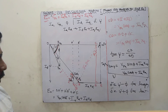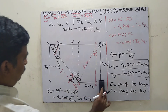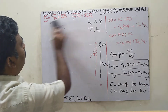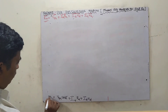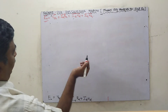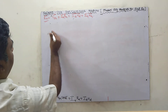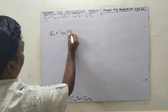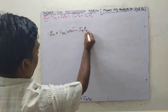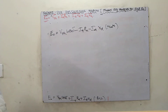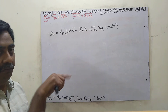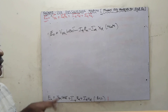Once we find E0, we can find regulation as E0 minus V phase. This formula is for the generator or alternator: E0 equals V phase·cos delta plus IQ·RA plus ID·XD. For the motor, V phase equals E0·cos delta minus IQ·RA minus ID·XD. So the method is: first find psi, then find delta, then substitute to find E0, then find the voltage regulation.